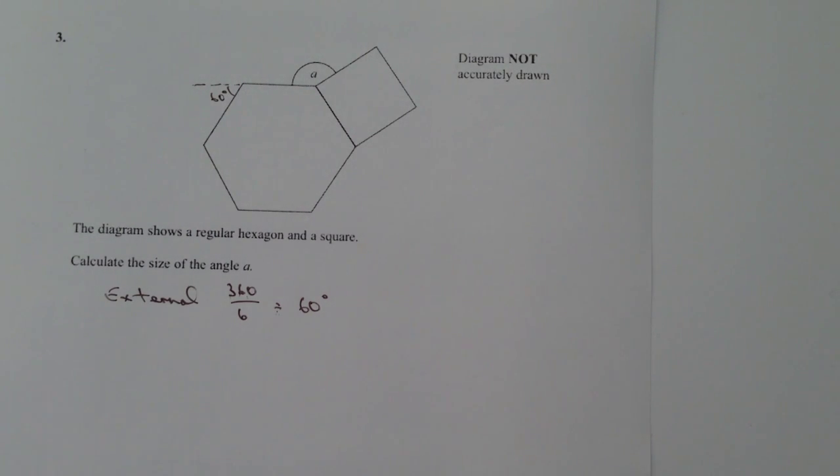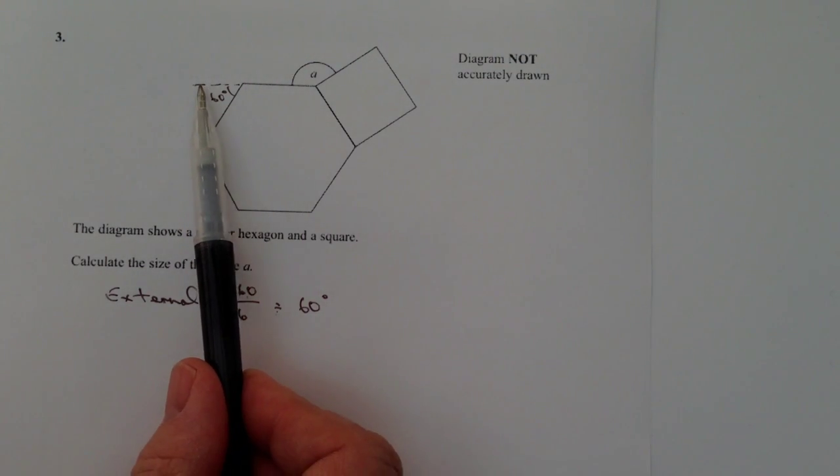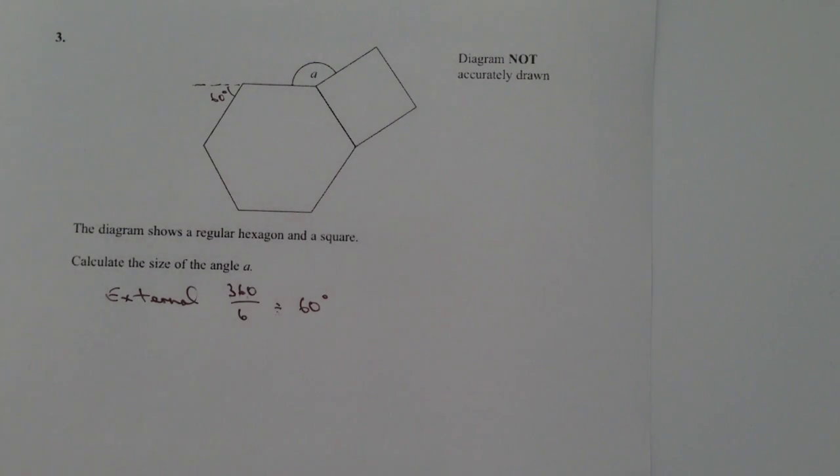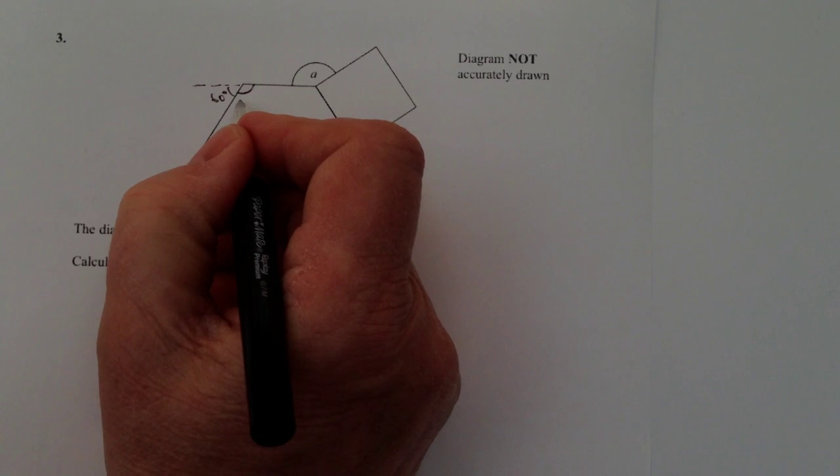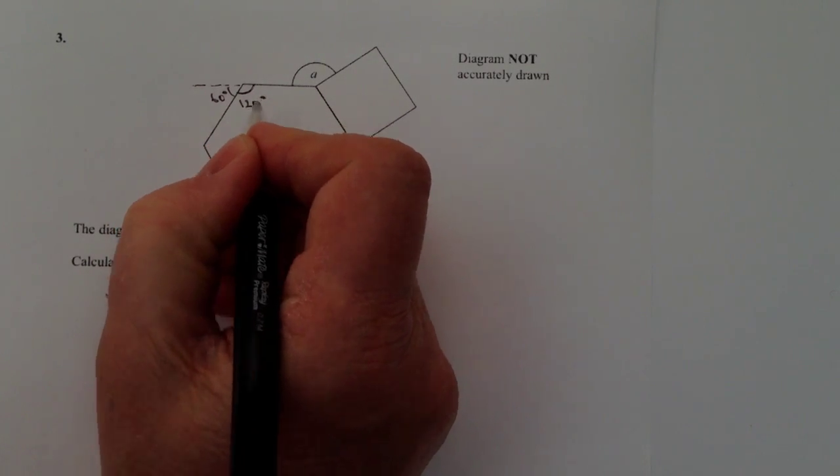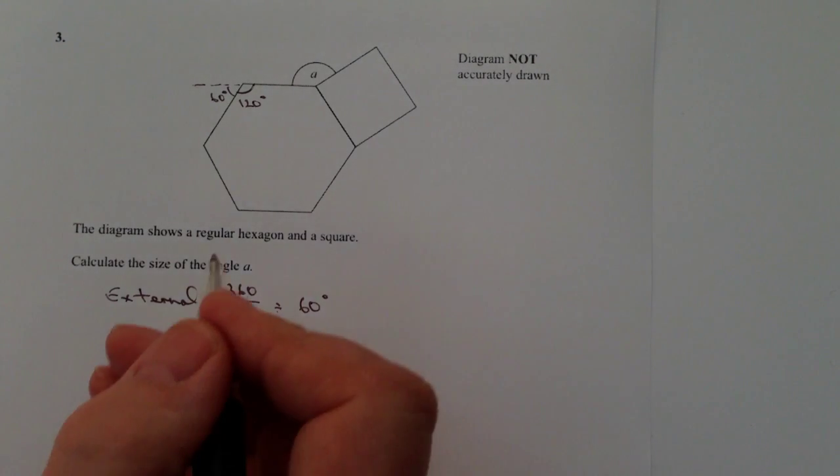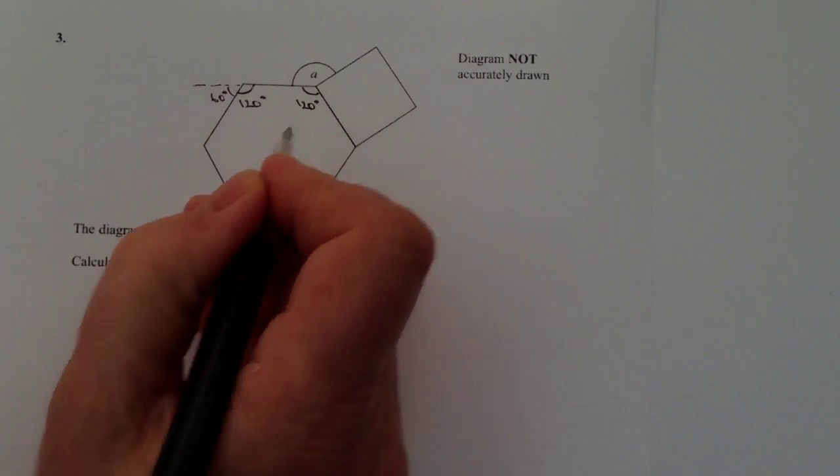That's kind of useful because it allows me then to work out the internal angle and the internal angle is just simply that this is a straight line and therefore it's 180 degrees. Take 60 away from it so the internal angle of the regular hexagon is 120 degrees and that goes for all of the six corners. They're all 120 degrees.